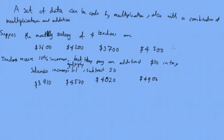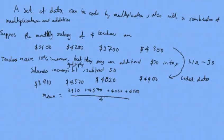So now their take-home salaries are $3,910, $4,570, $4,020, and $4,900. The original data has been coded by a multiplication and an addition: 1.1 multiplied by x minus 50. So this is our coded data.